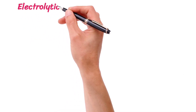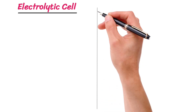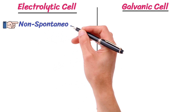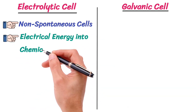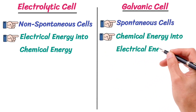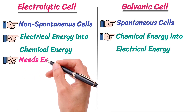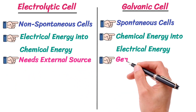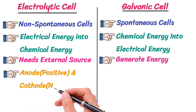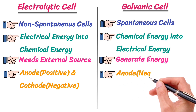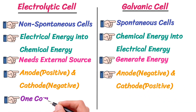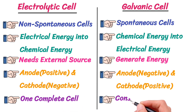Electrolytic cells are non-spontaneous electrochemical cells that convert electrical energy into chemical energy, while galvanic cells are spontaneous electrochemical cells that convert chemical energy into electrical energy. Electrolytic cells need an external power source, while galvanic cells generate electrical energy. In an electrolytic cell, the anode is positive and the cathode is negative, while in a galvanic cell the anode is negative and the cathode is positive. Electrolytic cells consist of one complete cell, while galvanic cells consist of two half cells.